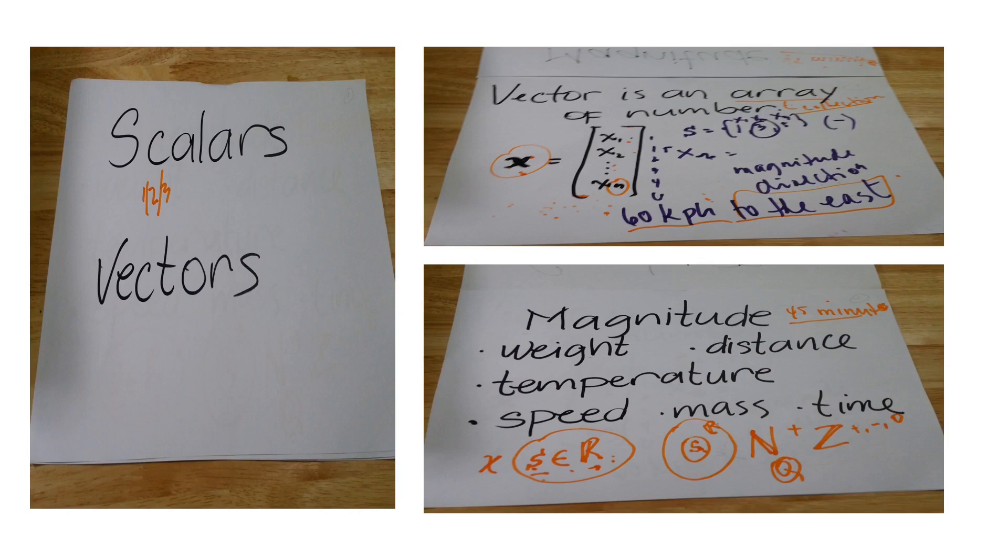We also learned that a vector denotes magnitude and direction, just like when we say 60 kilometers per hour to the east. We also noted that scalars and vectors are mainly relied upon as basis for some machine learning techniques like support vector machine. The link to lesson 2 is given in the description below.